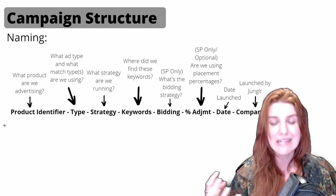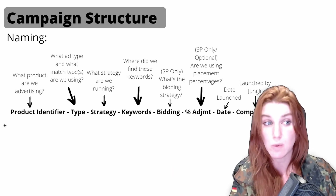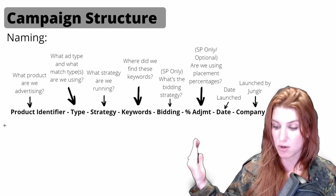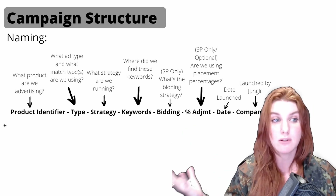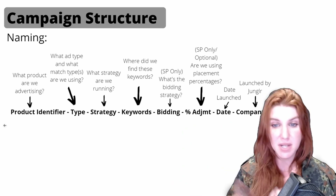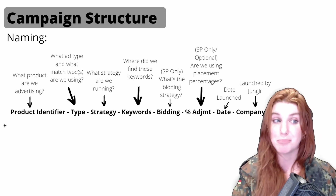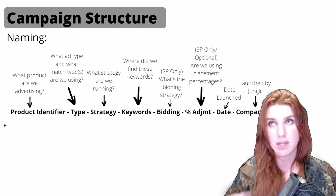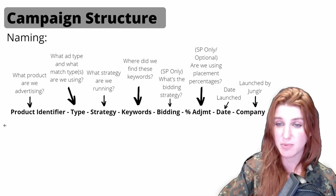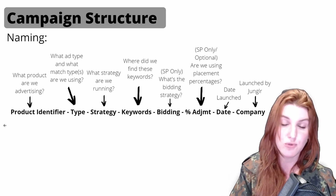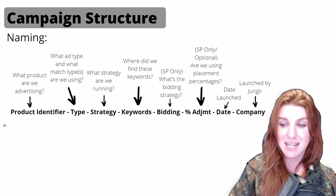If we're scraping all the ASINs off page one for a particular keyword, we should include that context. So where in the world did these keywords or targets come from? Next is bidding strategy — for sponsored products: fixed bids, down only dynamic, or up and down. This changes how bidding reacts, and it's helpful to know without having to dig into the campaign. You can also optionally add placement percentage adjustments if you're using those.